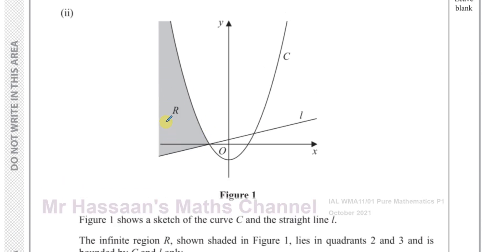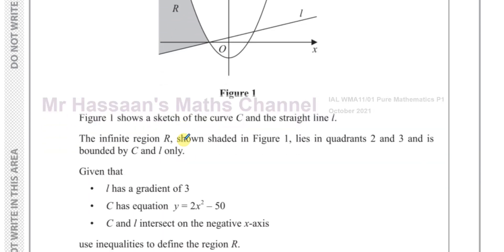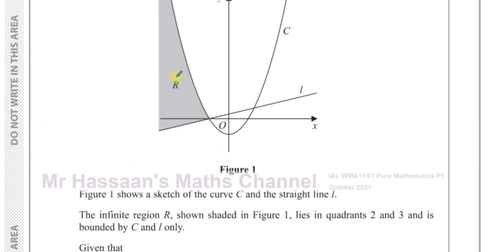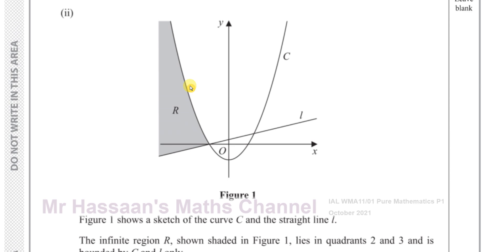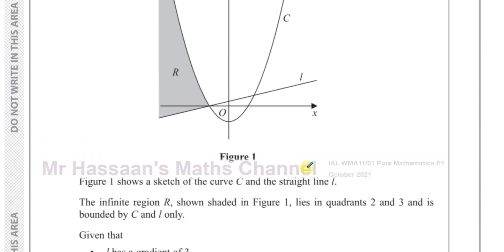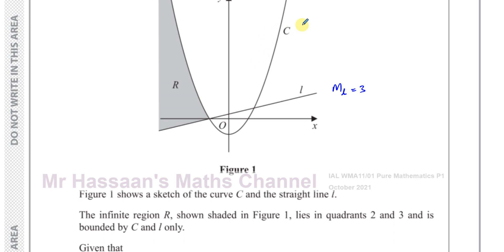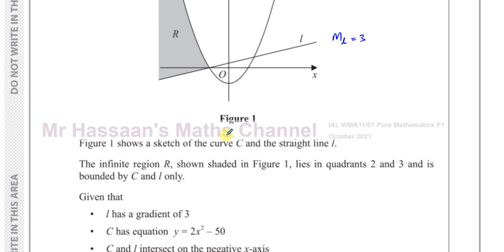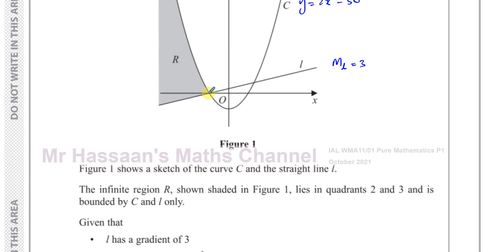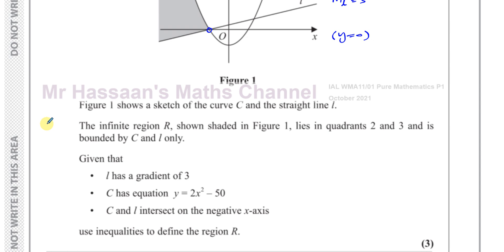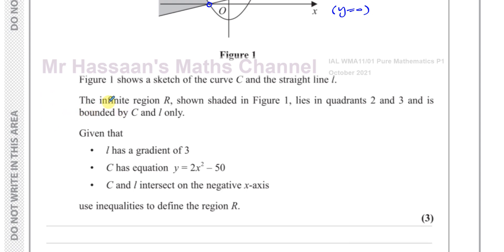We can figure out the inequalities if we know the equations of the curve and the line. The line has gradient 3. The curve C has equation y equals 2x squared minus 50. The curve and line intersect on the negative x-axis, meaning they intersect where y equals 0. Setting y equals 0 in the curve equation: 2x squared minus 50 equals 0, so x squared equals 25, giving x equals plus or minus 5.